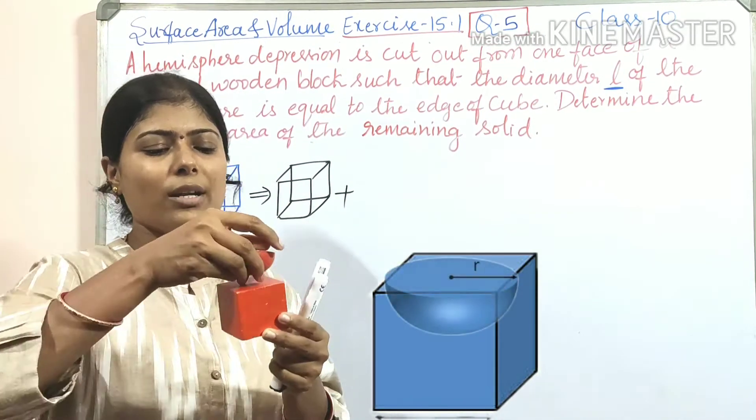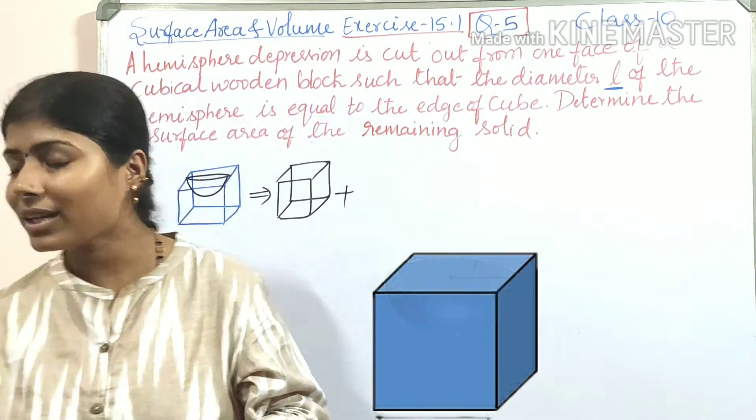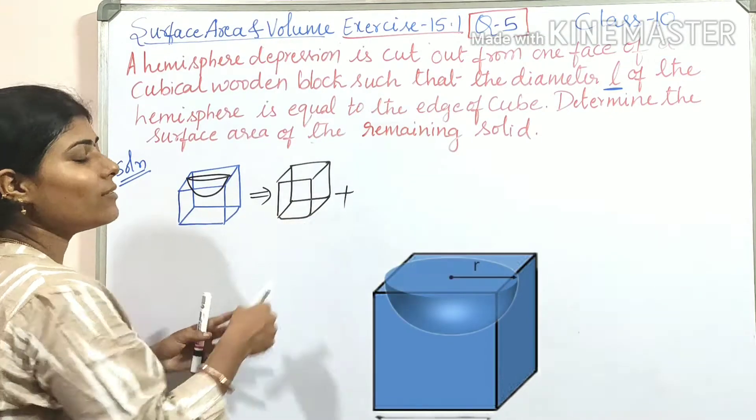Radius or diameter we are removing, but the depression remains in that cube. So we are considering that as an area. So it is plus.